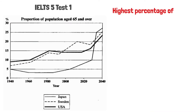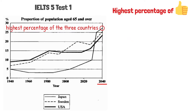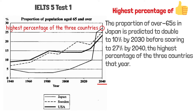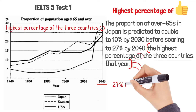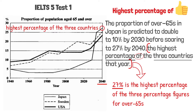Let me use another example to show how useful this expression can be. For this line graph, we can make a comparison at the end of the period and say that this percentage is the highest percentage of the three countries. The proportion of over 65s in Japan is predicted to double to 10% by 2030 before soaring to 27% by 2040 — the highest percentage of the three countries that year. I'm not comparing a percentage to countries; I'm comparing three percentages. 27% is the highest of the three percentage figures for over 65s. When we compare one member of a group to the rest, we should use 'of.' Hopefully, now you know when to use 'of' and not 'among.'